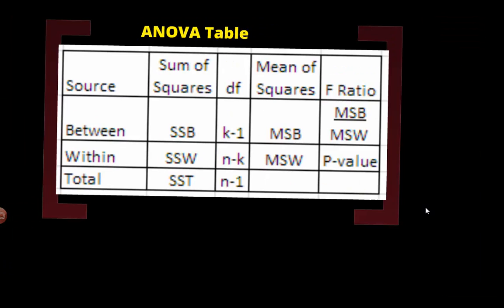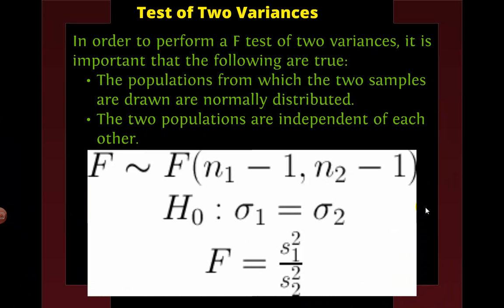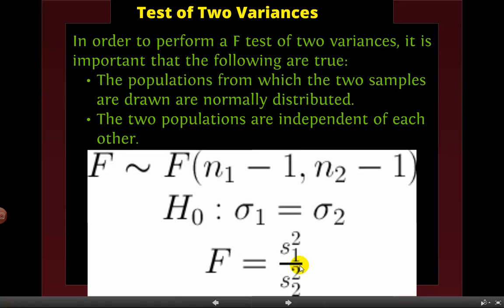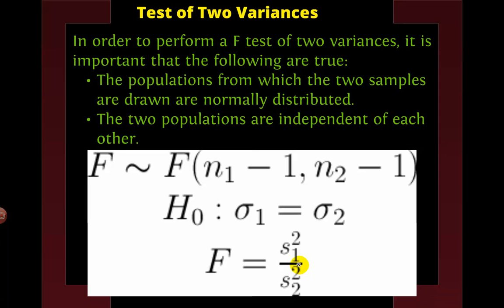The other thing we can do with the F-statistic is to compare whether two variances are equal to each other. We need to know that the populations are normally distributed, which we were always assuming, and that they are independent of each other. Then we have our null hypothesis, which is that sigma 1 is equal to sigma 2. We find our F-value, which is the variance of the first one divided by the variance of the second one. Then it will give us an F-ratio, which we can then calculate our p-value from, and then compare that to alpha.